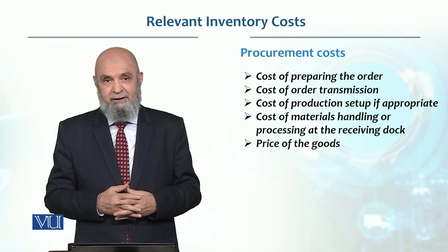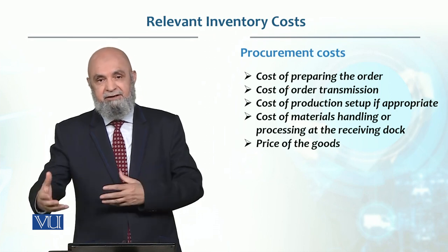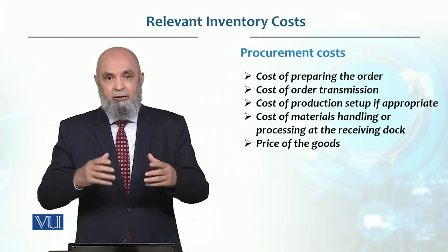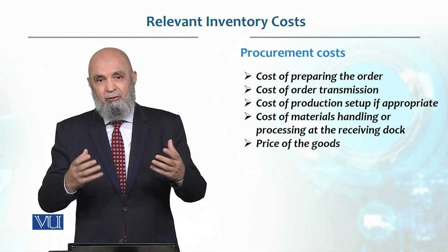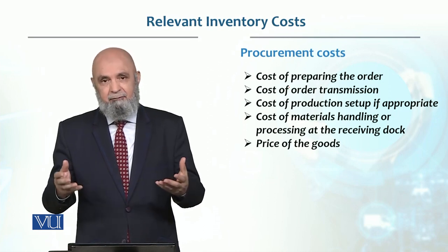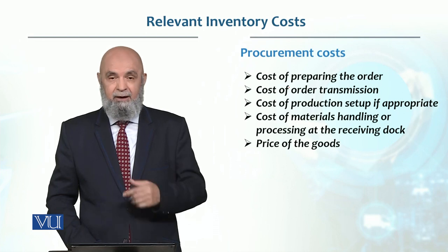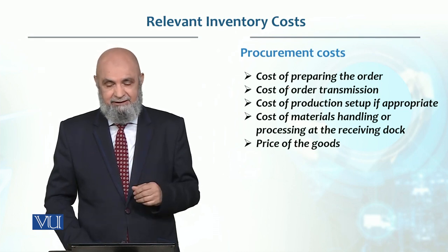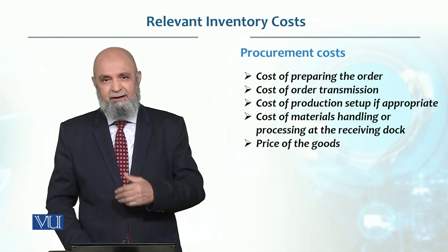Because the product is changing, the setup cost will be included in ordering. Whenever an order is released, a setup cost comes. In setup cost, it may be necessary to shut down the line for hours — for example, in America when changing a car model from one to another, there would be a full shift shutdown of eight hours. This gets included in procurement cost. Then material handling: when you are receiving, you have to handle it, so that cost also comes under procurement. And procurement cost also includes the price of goods, but when we use it to develop a model, the price of goods will not be considered separately — only the service costs incurred will be used.